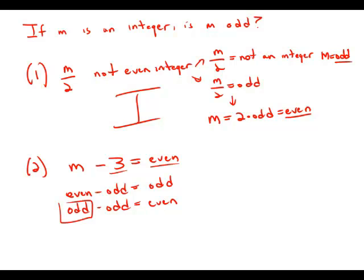So it must mean that m is odd. So this statement does conclusively tell us that m is odd. It is conclusive for answering the question, so statement number two is sufficient. Answer choice B.